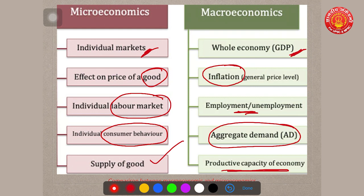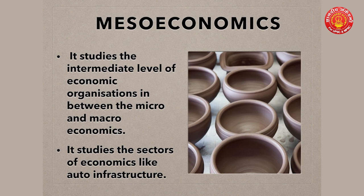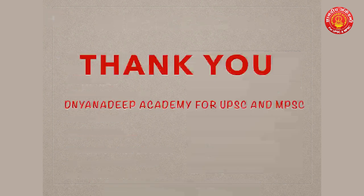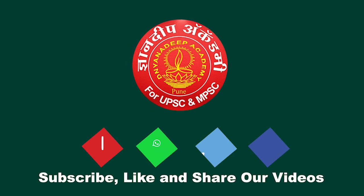Mesoeconomics is an intermediate level between macroeconomics and microeconomics. It studies intermediate-level economic organizations — for example, between tires and GDP there is the automobile sector; between raw materials like steel and cement and overall employment there is the infrastructure sector. So sectors like the automobile sector, infrastructure sector, and agriculture sector are mesoeconomic factors that complement macroeconomics. Thank you for watching — stay tuned for more lectures.